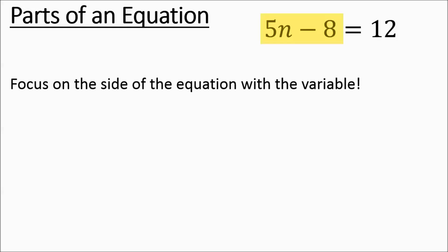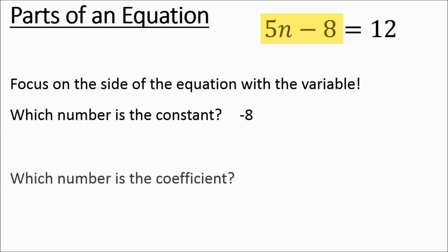We want to figure out which number is the constant. The constant is the number that's being added or subtracted — it's by itself. In this case that's going to be the negative 8. And then the coefficient — which number is the coefficient — in this case it's a 5.